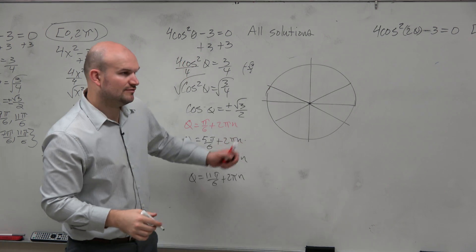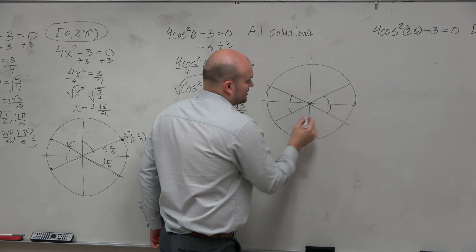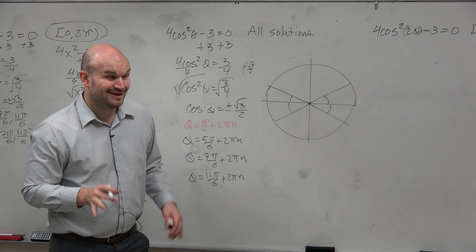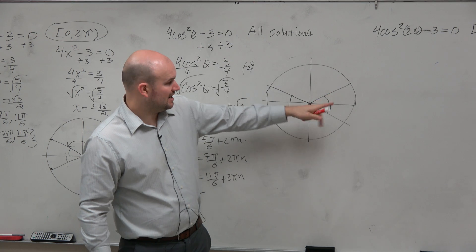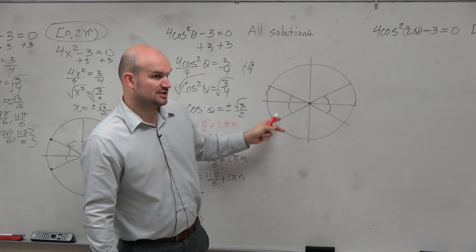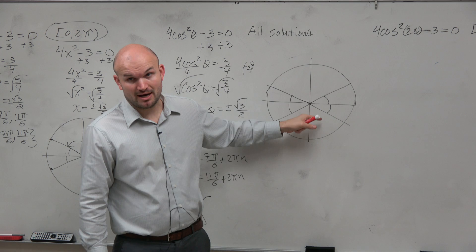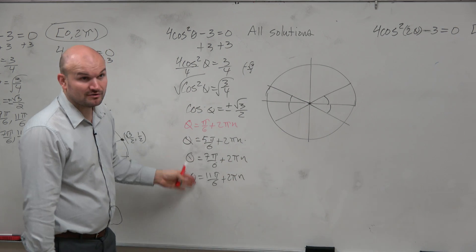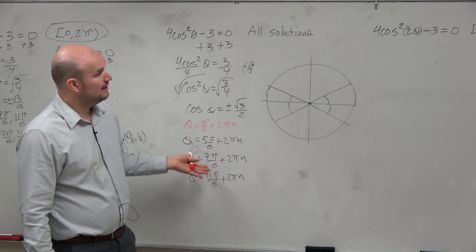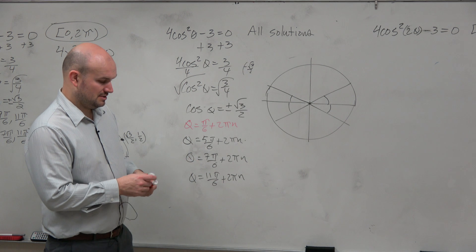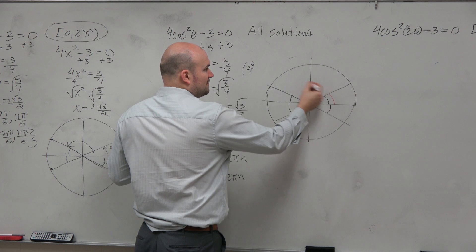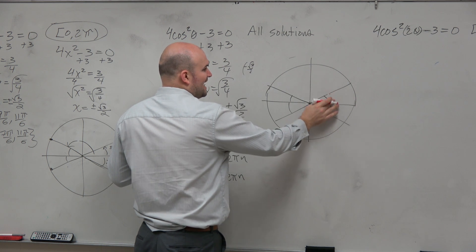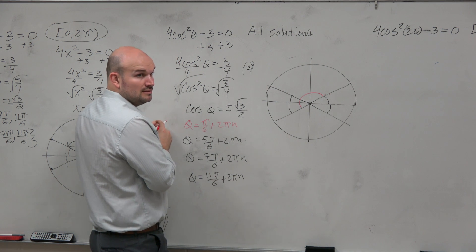So here are all of our solutions. They all have the same reference angle π/6. Now, rather than saying this angle plus 2π, this angle plus 2π, this angle plus 2π, this angle plus 2π — you guys can see that's a lot of things to write. So what we could do: instead of going all the way around, if I take this angle and just add π, do I get to the next answer? Yes.